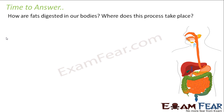Now it is time to answer some questions. How are fats digested in our bodies and where does this process take place? Fats are composed of simpler substances like fatty acids and glycerol, and they need enzymes for their digestion. We get those enzymes from the pancreatic juice. The pancreas sends pancreatic juice through the pancreatic duct into the duodenum of the small intestine.